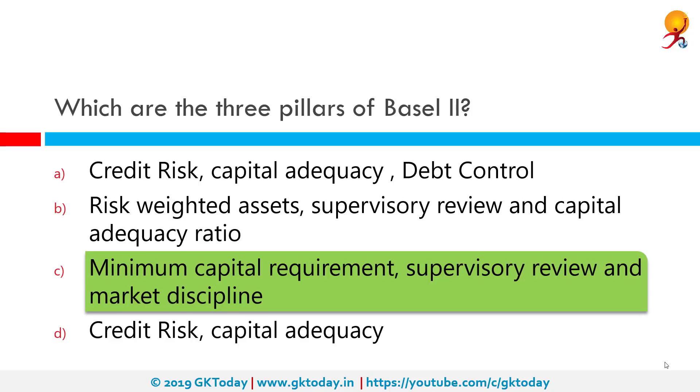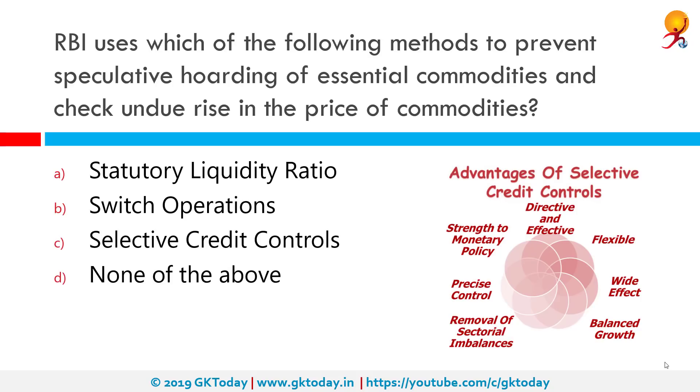The Basel 1 accord dealt with only parts of each of these pillars, whereas in Basel 2 the scope of all three pillars was increased.